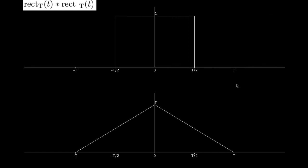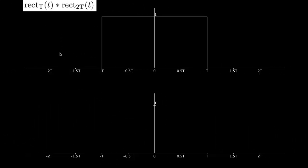So what we get in the end is a triangle function that has a width of 2t and a height of t.